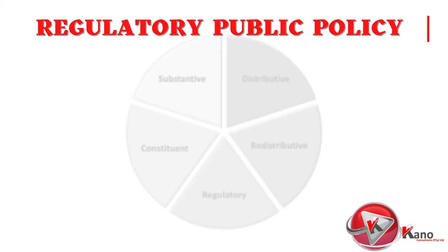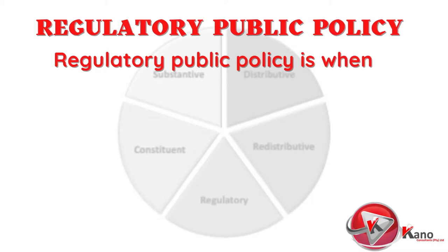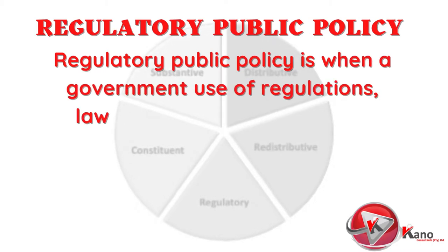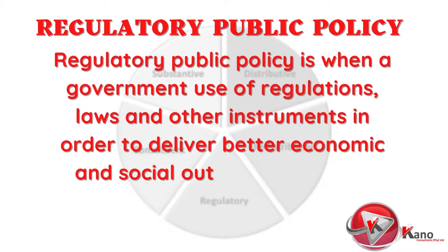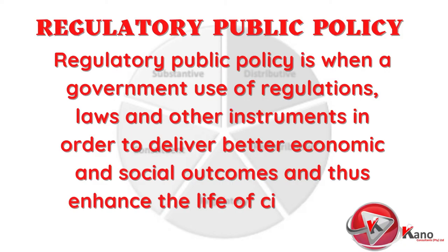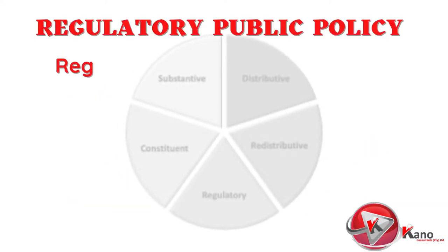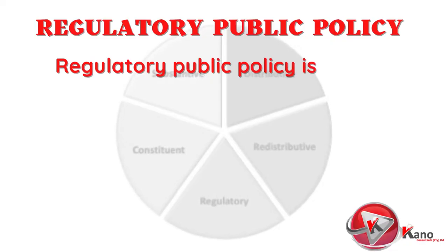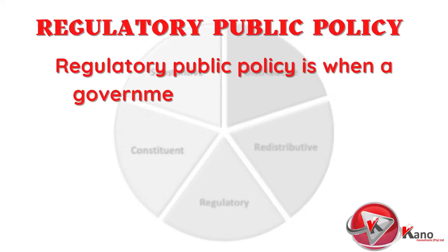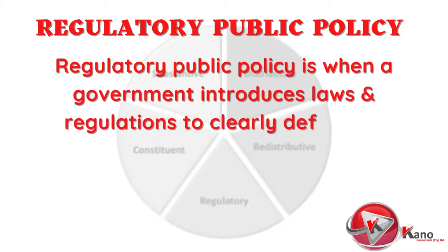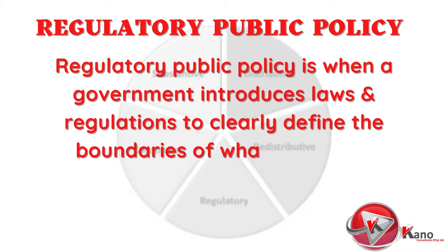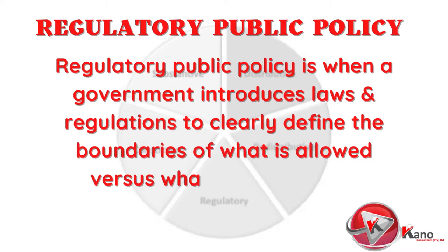The next type is regulatory public policy. This is when a government endeavors to achieve its objectives through the use of regulations, laws, and other instruments, in order to deliver better economic and social outcomes, and thus enhance the life of citizens and improve the operating environment for businesses. In other words, regulatory public policy is when a government introduces laws and regulations to clearly define the boundaries of what is allowed versus what is not allowed, by placing restrictions on what individuals, businesses, or organizations can do, for the purpose of protecting the overall economic and social welfare.